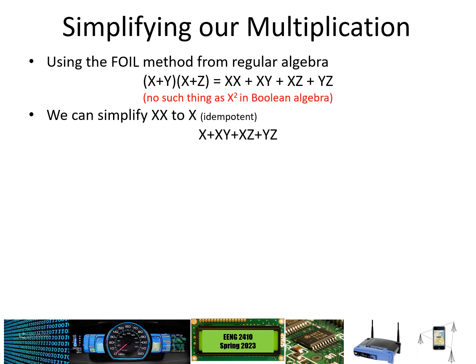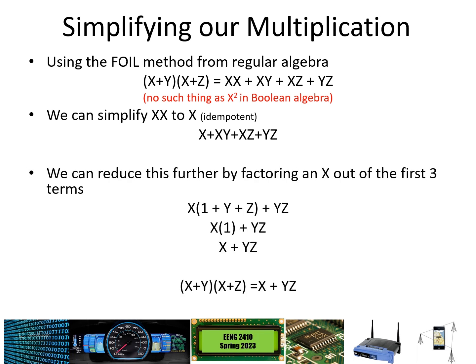Note that x times x equals x is true because the domain in Boolean algebra is zero and one — the only two numbers for which x squared equals x. We can reduce further by factoring out x from the first three terms. Factoring x from (x OR xy OR xz) gives x AND (1 OR y OR z), leaving OR yz on the end. Inside the parentheses, 1 OR y OR z simplifies to 1, so we get x AND 1 OR yz. Since x AND 1 equals x, this simplifies to x OR yz.